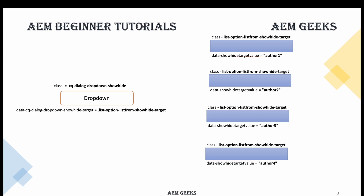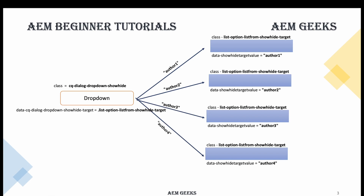By default all containers will be hidden. When I change the dropdown to the first value, author one, its container becomes visible. Same way when I choose author two, the rest are hidden and that one becomes visible. Initially on page load, whichever item is selected in the dropdown will be visible. So adding these classes and data elements alone is not enough — you also need to write a jQuery event handler.